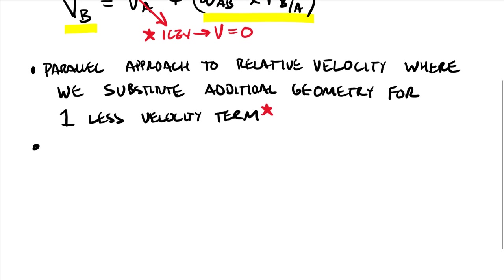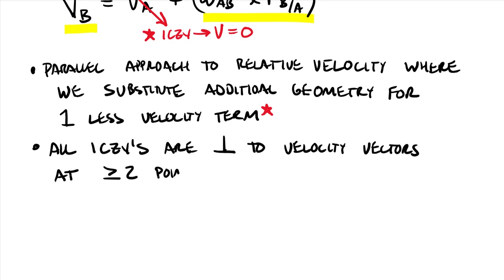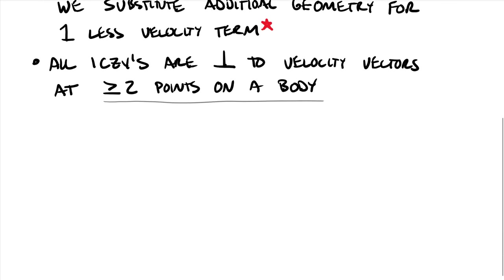Now one little point, kind of the main definition of how we find these, and I'll go through some different rules. One point on how to find these, I'll additionally go through some rules. Specifically, we can say that all ICZVs are perpendicular to velocity vectors at greater than or equal to two points on a body. It turns out that we cannot find an ICZV unless we have two points of velocity on a body, but once you have two points, then we're off to the races.